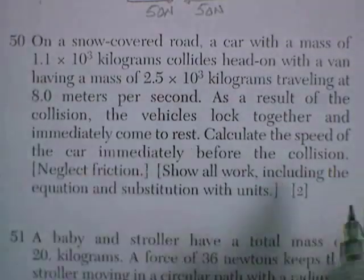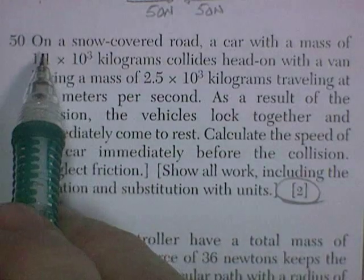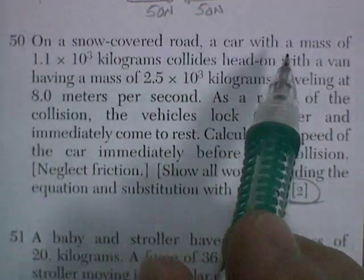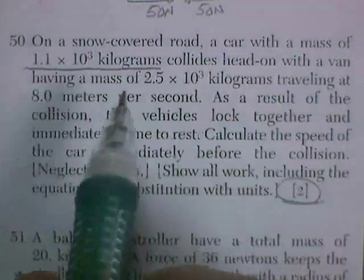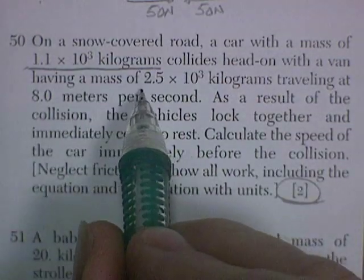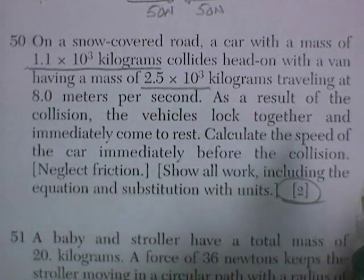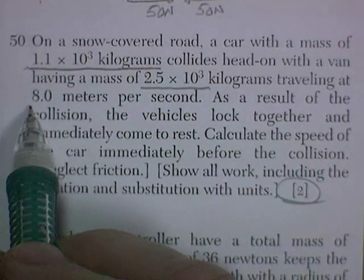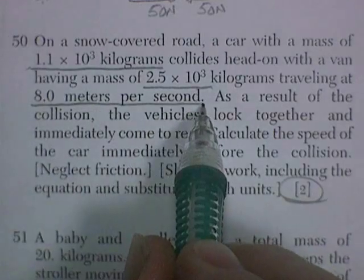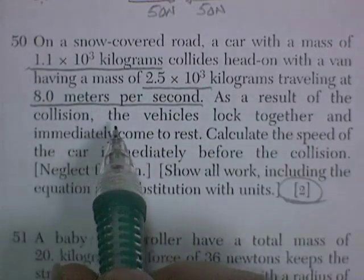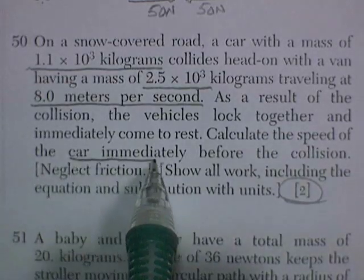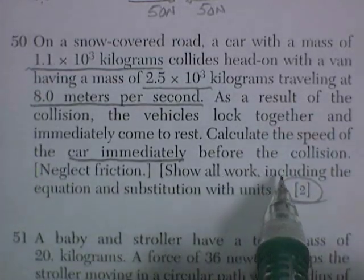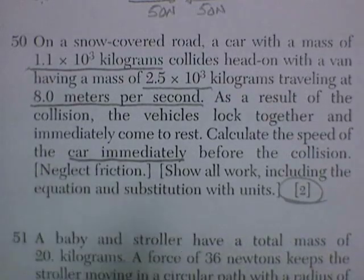Question 50 is going to be for two points, so they're going to want some work. On a snow-covered road, a car with a mass of 1,100 kilograms collides head-on with a van having a mass of 2,500 kilograms traveling at 8 meters per second. As a result of the collision, the vehicles lock together and immediately come to rest. Calculate the speed of the car. Show all your work, including the equation, substitution with units, and neglect friction.